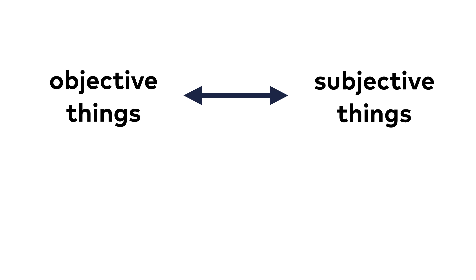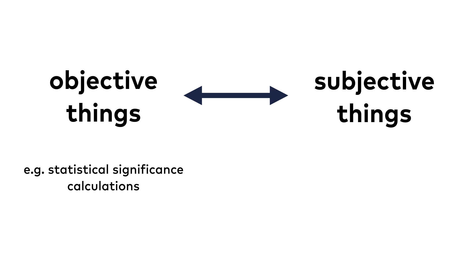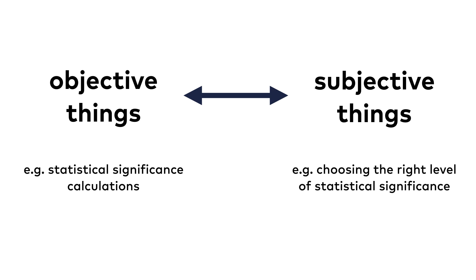The simplest example is calculating statistical significance. It's plain science, right? There is a formula, you use it, you get your results — there is no room for opinions. Or actually, there is. Even in something as objective as statistics, there is a place for subjective opinions.